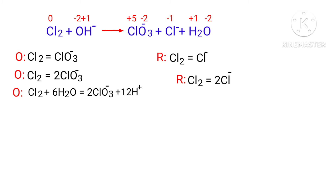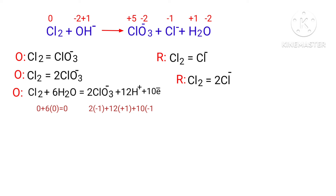For a redox reaction the addition of charges should be equal on both sides. Checking the oxidation half reaction, both sides are not equal. To make them equal you should add electrons — you cannot add protons. Adding 10 protons to the left side would be wrong, but you can add 10 electrons to the right side to make it equal to 0.